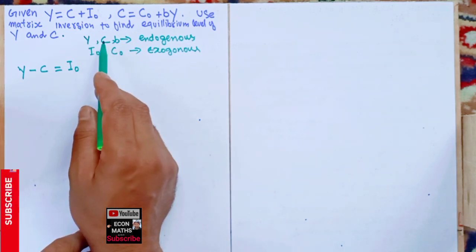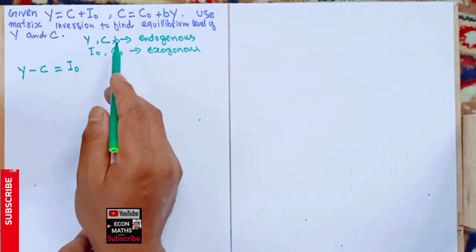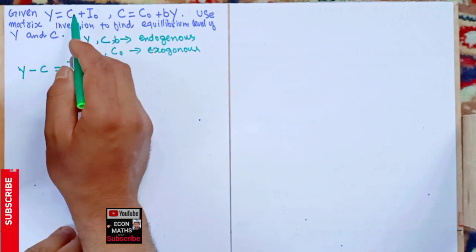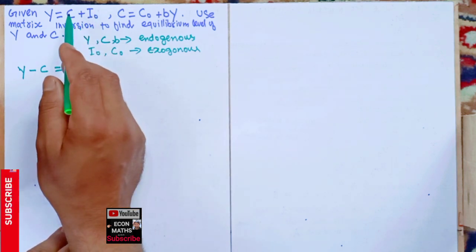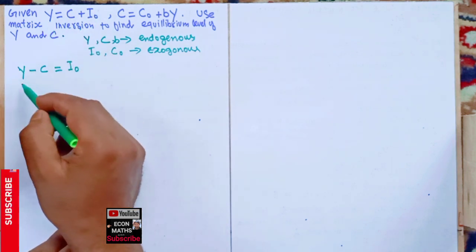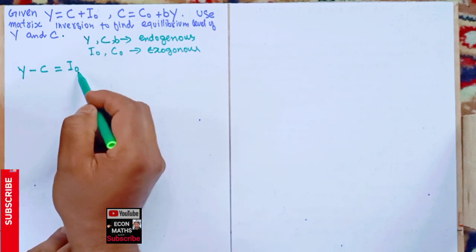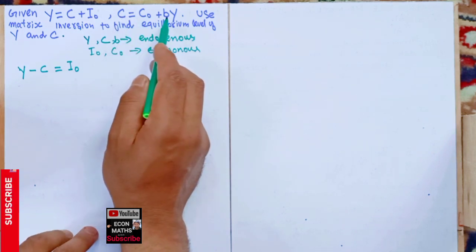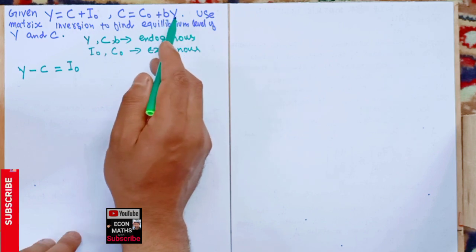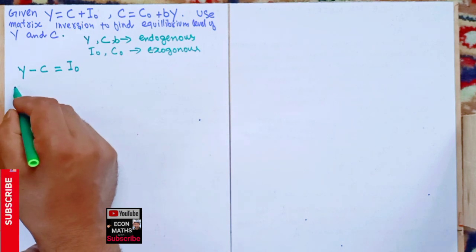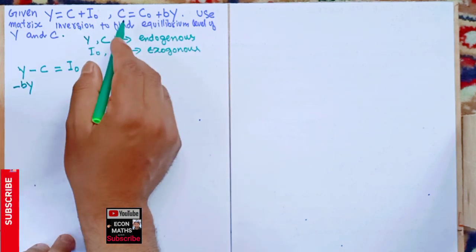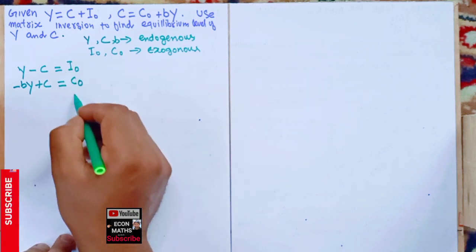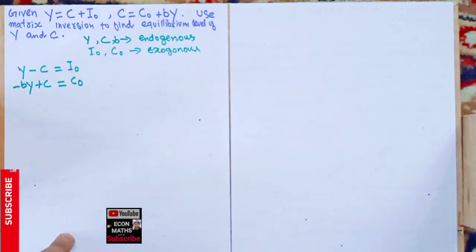We take the endogenous variables Y, C, and b on the LHS and exogenous variables on the RHS. From Y = C + I₀, transposing C gives Y − C = I₀. Similarly, from C = C₀ + bY, taking bY to the left gives −bY + C = C₀. So these are our two rearranged equations with endogenous variables on the left.